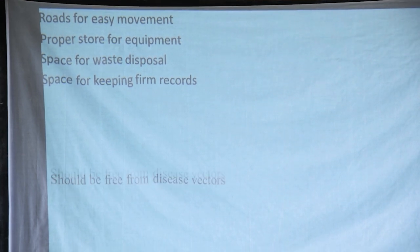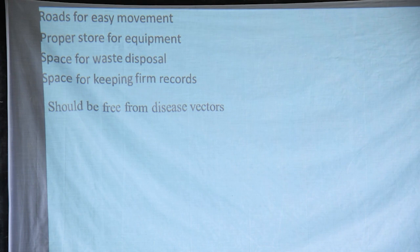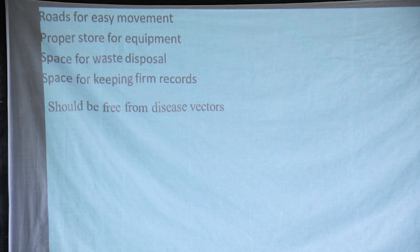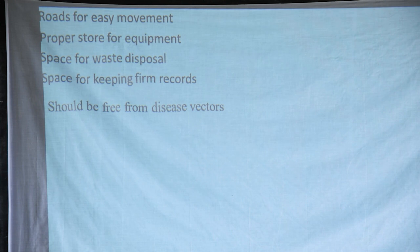A good farm should have roads for easy movement within. You should have roads to easily move to different portions — areas for feeding, areas for vaccination should be accessible within your farm. There should also be proper storage for equipment: tools used on the farm shouldn't be littered after use, they should be kept safely. A good farm should also have proper space for waste disposal — not just littering on the land, because these wastes can be used as manure.